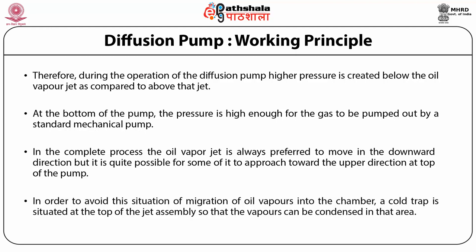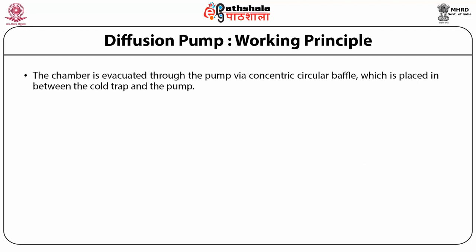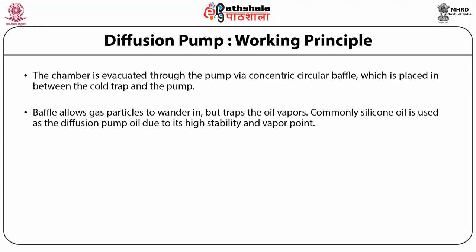In order to avoid this situation of migration of oil vapors into the chamber, a cold trap is situated at the top of the jet assembly so that the vapors can be condensed in that area. The chamber is evacuated through the pump via a concentric circular baffle which is placed in between the cold trap and the pump. The pump baffle allows gas particles to enter in but traps the oil vapors.